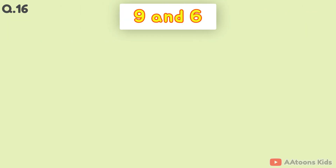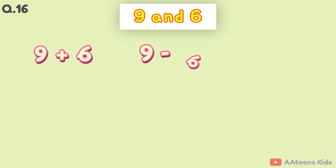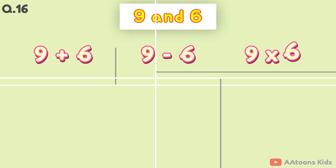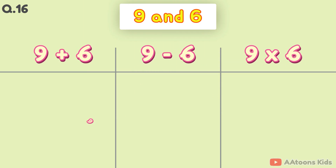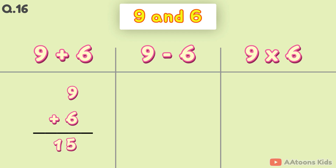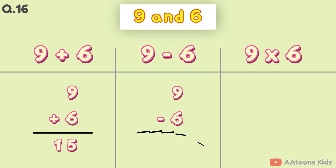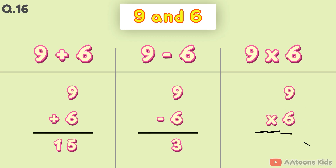The two numbers are 9 and 6. 9 plus 6 is 15. 9 minus 6 is 3. 9 times 6 is 54.